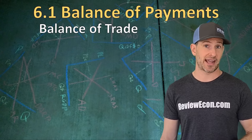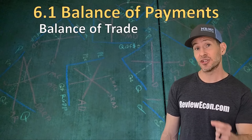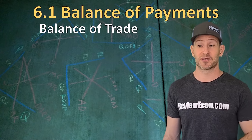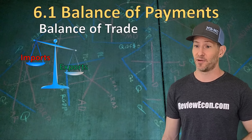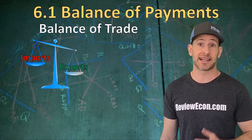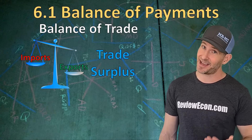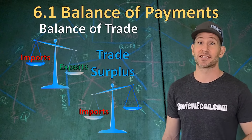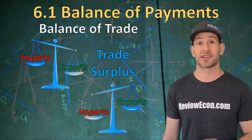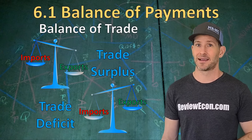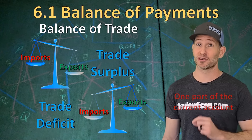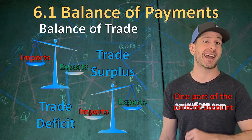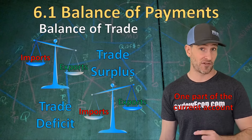One component of the current account is the balance of trade. That's the goods and services that are purchased between countries — we call those imports and exports. When exports are greater than imports, it is said that the country has a trade surplus. In the United States in recent history, we have had greater amounts of imports than exports, and we have had a trade deficit. Since the trade balance is only one portion of the current account, it is possible that we could have a trade deficit and not have a deficit in the overall current account.